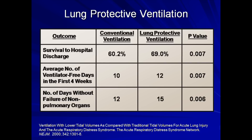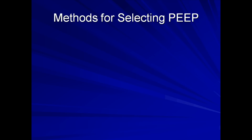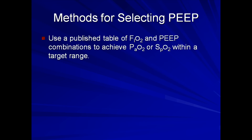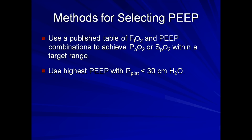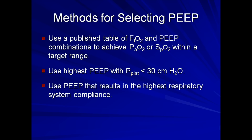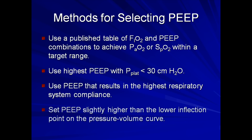One of the more variable aspects of these protocols is the method for selecting PEEP. PEEP can be selected using a published table of FiO2 and PEEP combinations to achieve an arterial oxygen tension or peripheral O2 saturation within a target range — this was what was done in the ARDSNET trial. PEEP can also be set at the highest value that allows the plateau pressure to remain under 30. The PEEP can be adjusted to provide the highest possible respiratory system compliance. And finally, PEEP can be set slightly higher than the lower inflection point on the pressure-volume curve. There are probably additional methods, and the theories behind each of these options are beyond the scope of this lecture series.